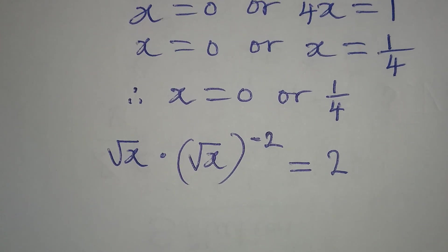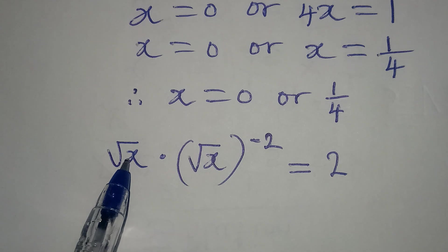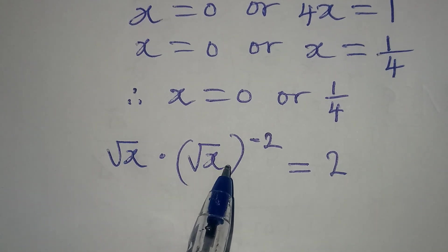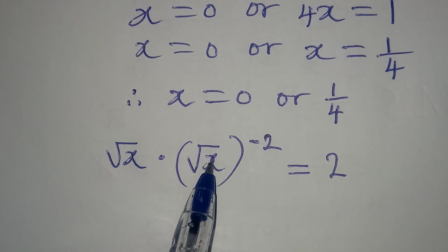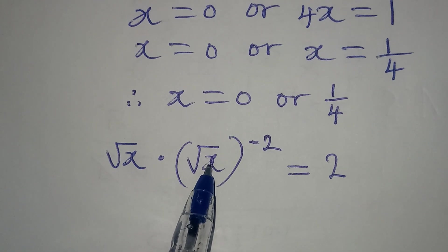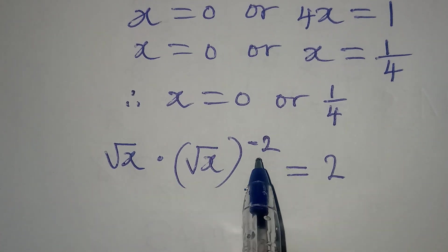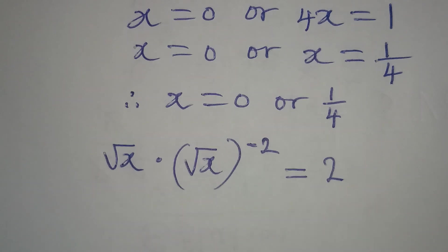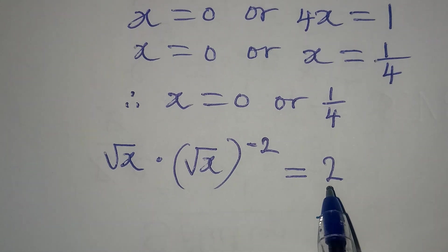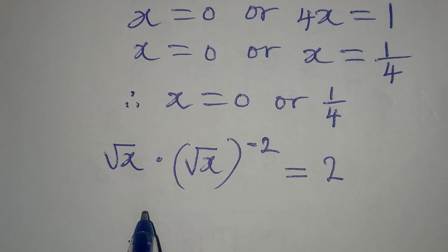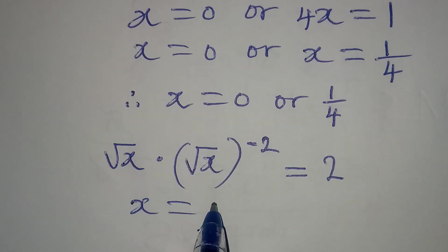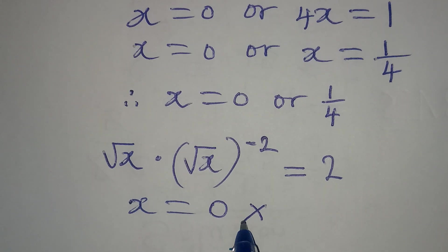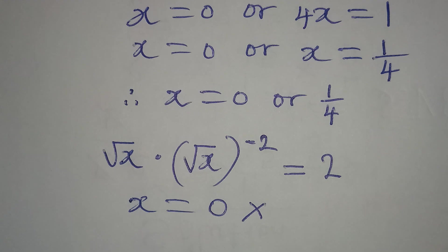0 will not satisfy this equation because square root of 0 is 0, and square root of 0 to the power of negative 2 will still give 0. But on the right-hand side we are having 2, so x equal to 0 does not satisfy the equation.